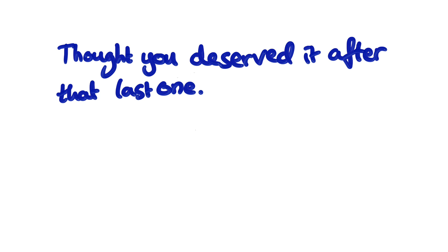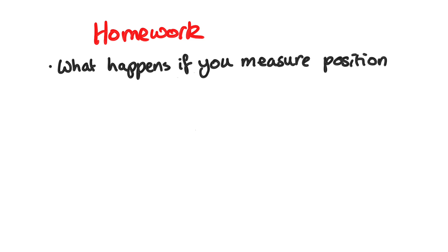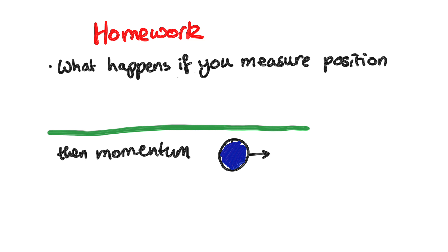I am working on a video that's a little bit more technical and will go into the derivation of the Heisenberg uncertainty principle, but that one may not be up for a little while. Anyway, just one very quick homework question for this video. What happens if you measure the position of a particle, and then the momentum, and then the position again? Is it going to be in the same spot or not? Alright, see you next time.